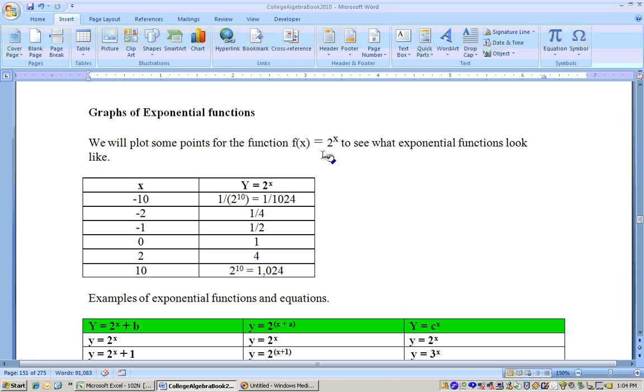So let's start off by graphing an easy one like f of x equals 2 to the x. We'll put in some values for x and get out some values for f of x or y. If I put negative 10 in for x, I'd get 2 to the negative 10th. Negative exponent means reciprocated, so I get 1 over 2 to the 10th, and 2 to the 10th is 1024, so this would be 1 over 1024.